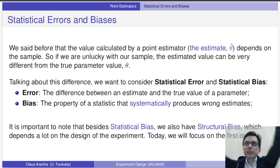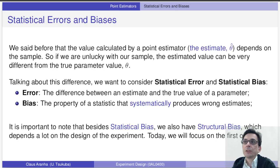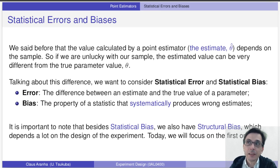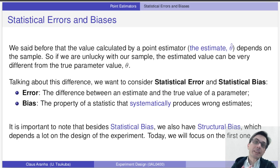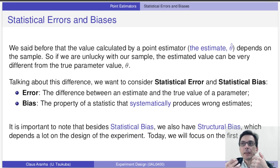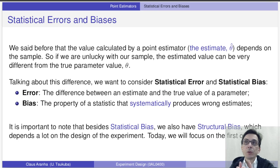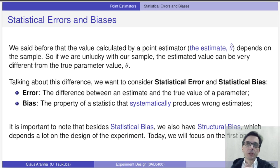For example, imagine that we want to calculate the average height of the students of the University of Tsukuba. But because we are a little bit lazy, we did our experiment using only students from our circle. Unfortunately, we are in the basketball circle. So you can imagine that the value calculated by our statistic will be much higher than what we imagine is the true value of the mean height parameter.